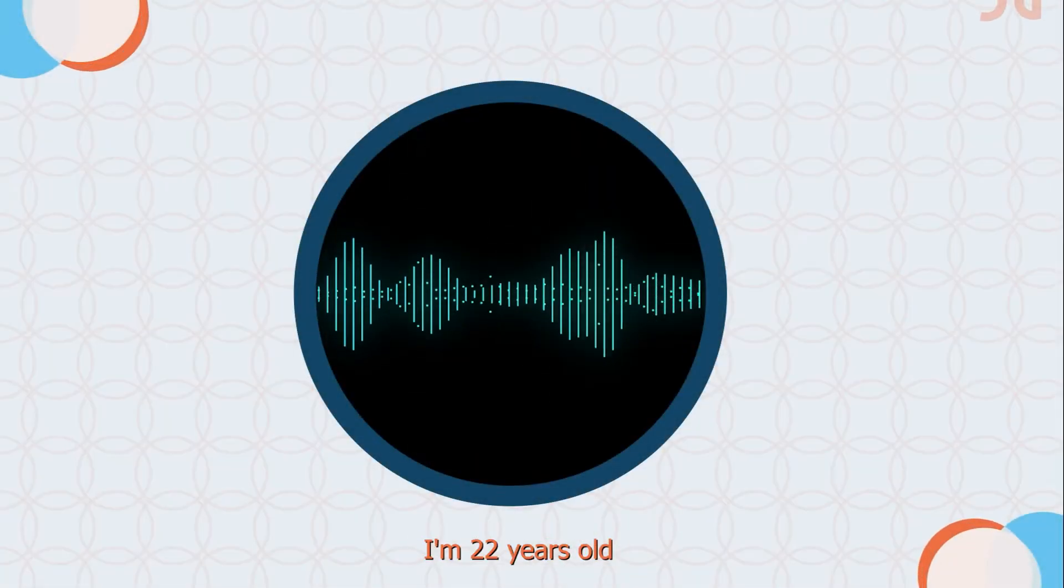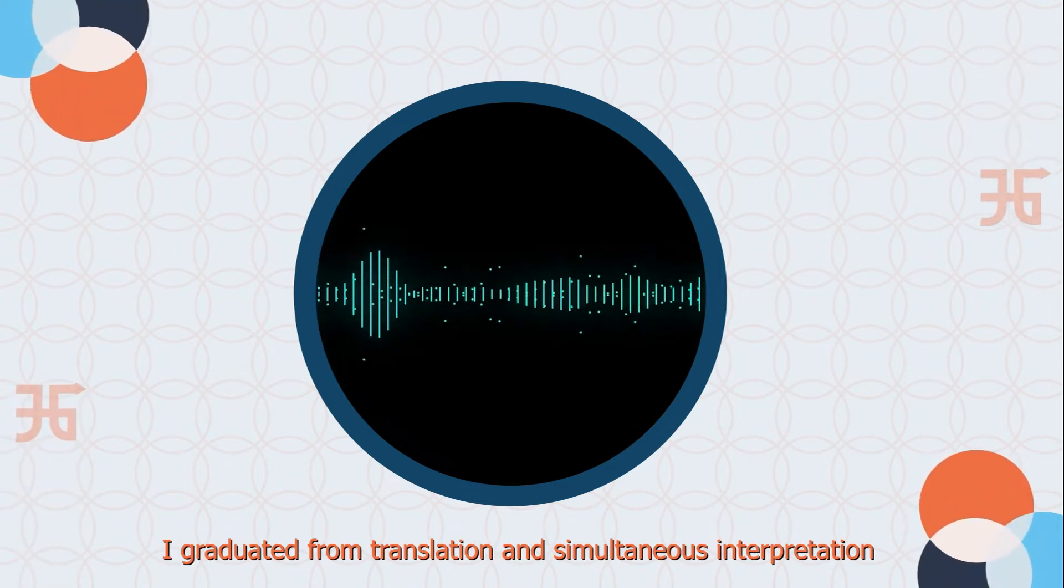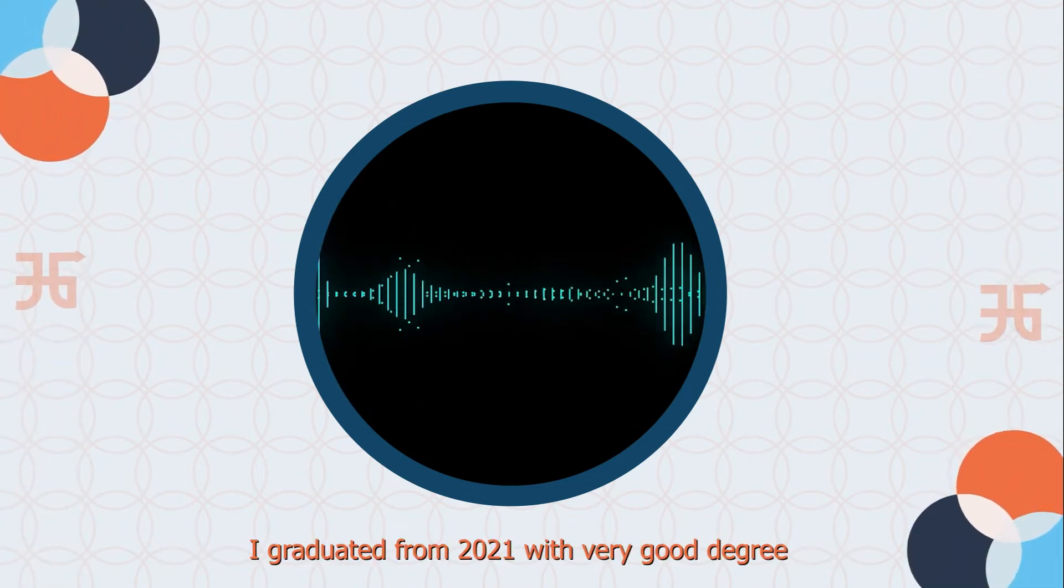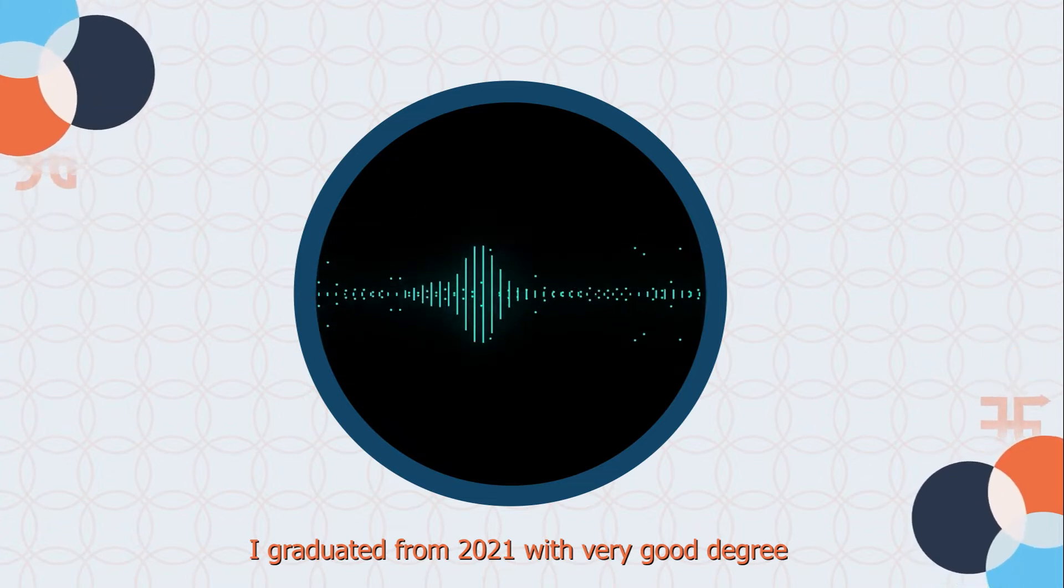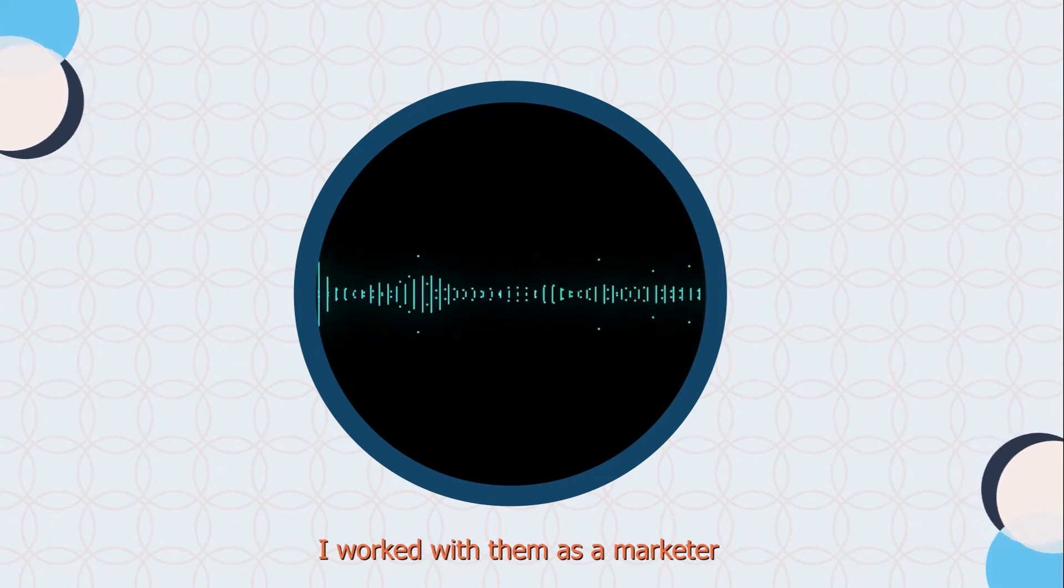Hi, I am Manar Ahmed. I'm 22 years old. I graduated from Translation and Simultaneous Interpretation. Actually, I graduated in 2021 with a very good degree. I trained with Jauhara Translation. After that, I worked with them as a marketer.